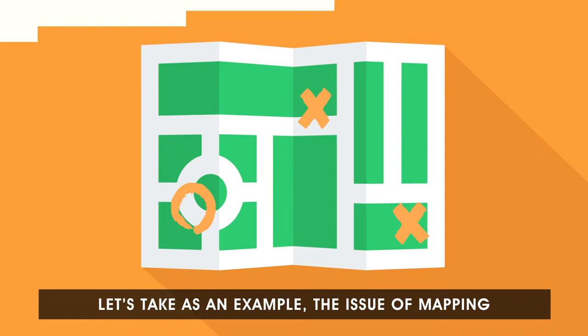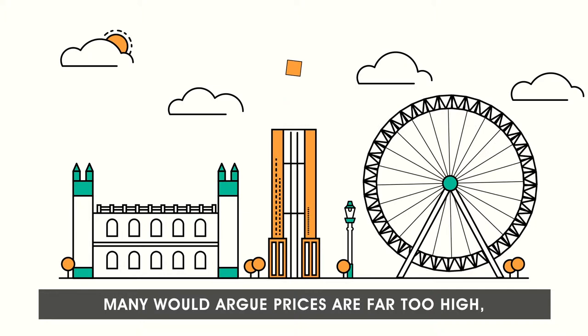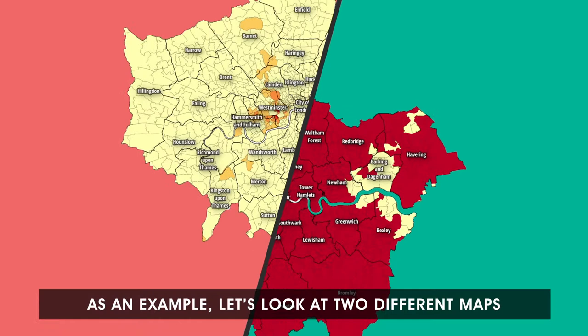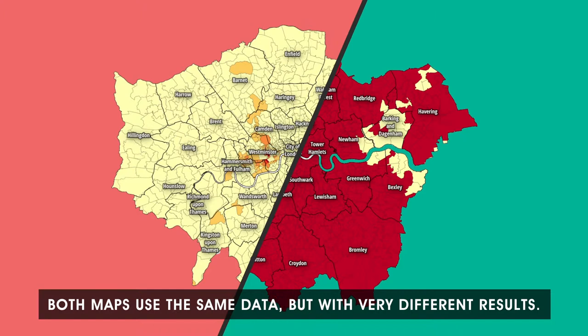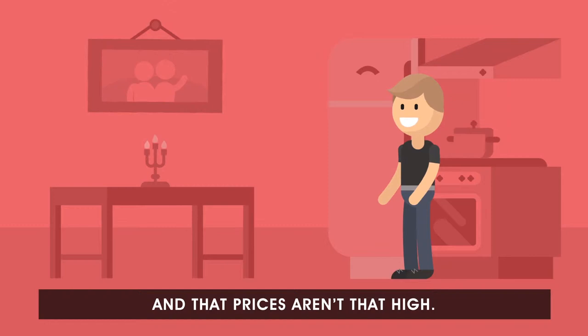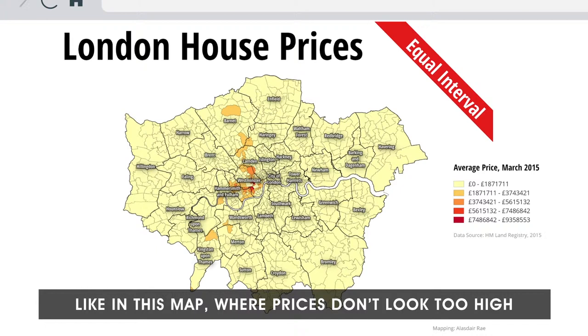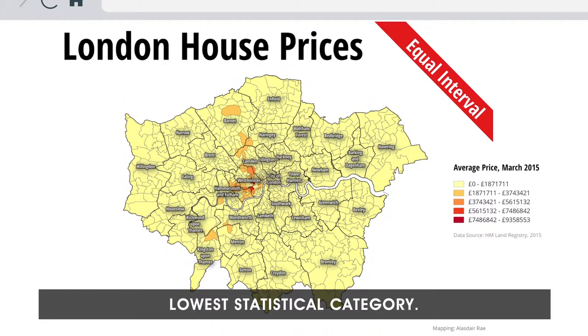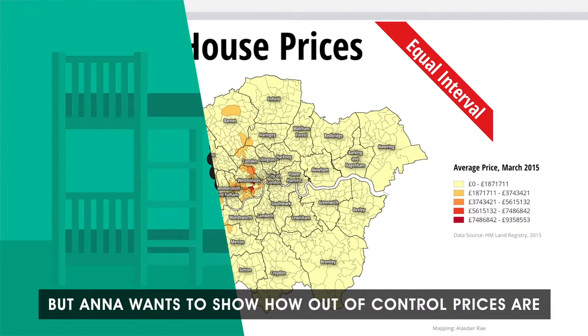Let's take as an example the issue of mapping house prices in London. Many would argue prices are far too high, but do the maps agree? Let's look at two different maps of London house prices. Both maps use the same data but with very different results. Jim wants to show that things aren't actually that bad and that prices aren't that high. In this case he could use an equal interval classification, like in this map, where prices don't look too high in most of the city. Most areas show an average house price in the lowest statistical category, helping make the argument that prices aren't actually that high.